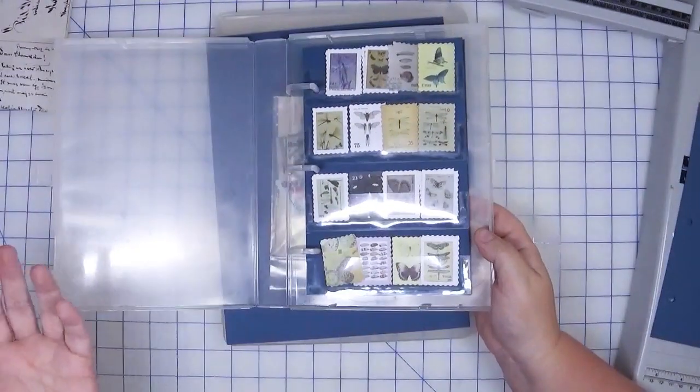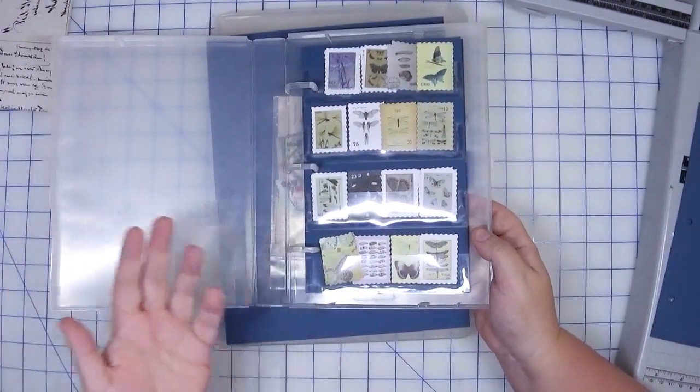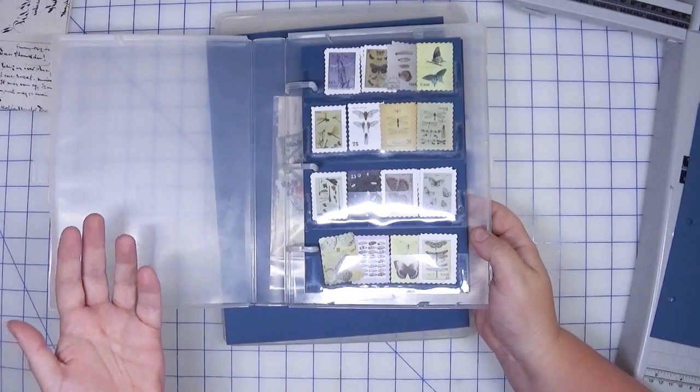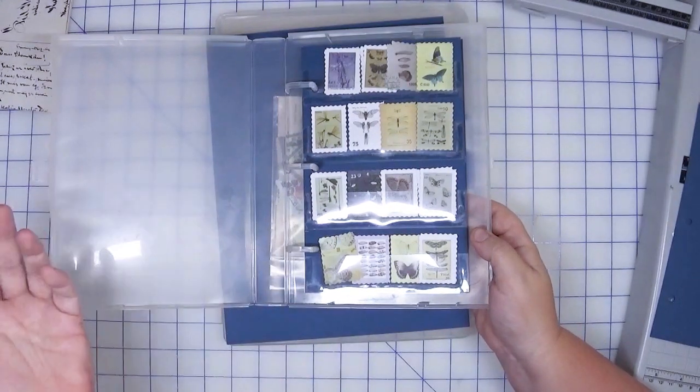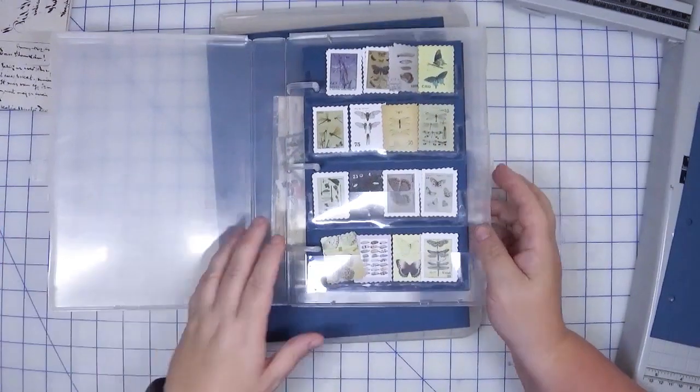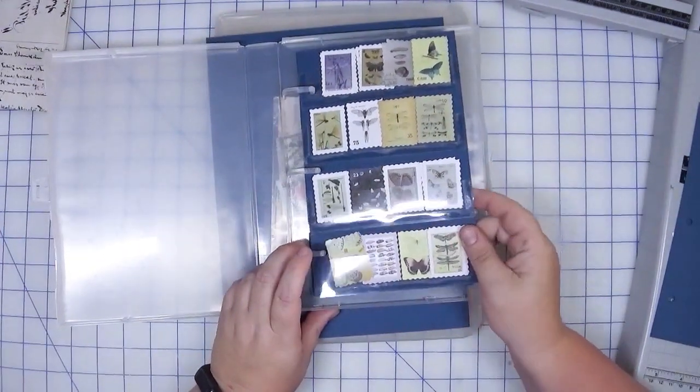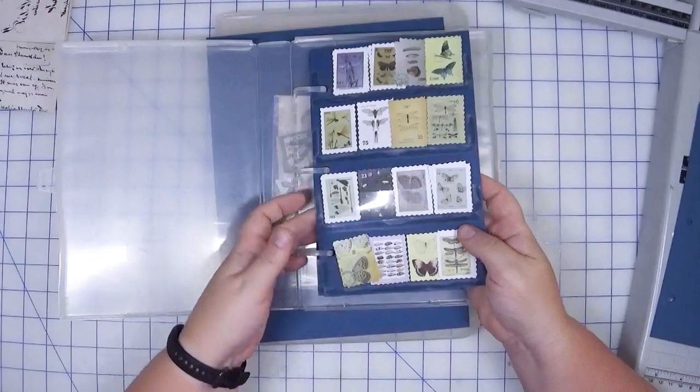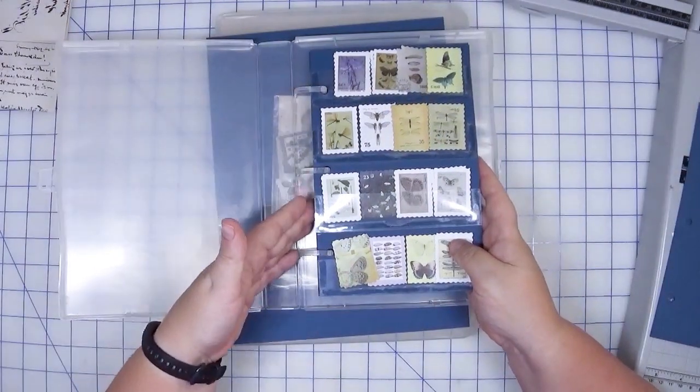But you don't have to use this. You can use an eight and a half by eleven binder that you have lying around, or one of those half binders would work as well. The nice thing about going the bigger size is it's effectively less work and you get more storage.